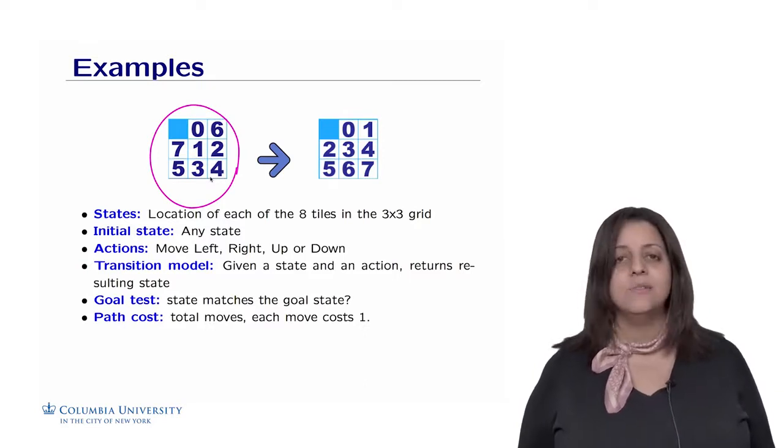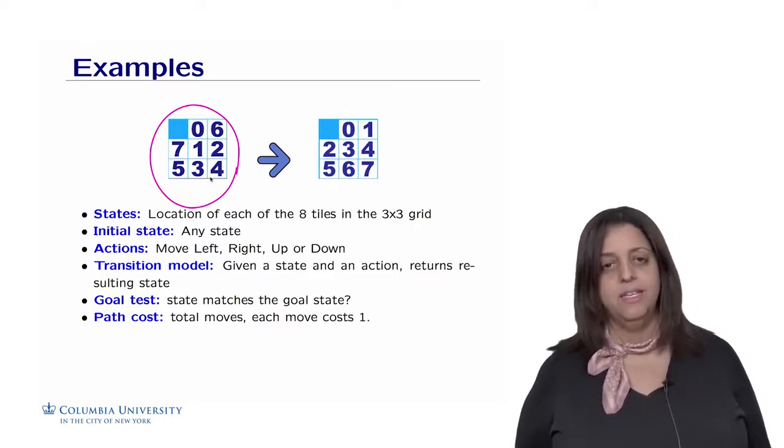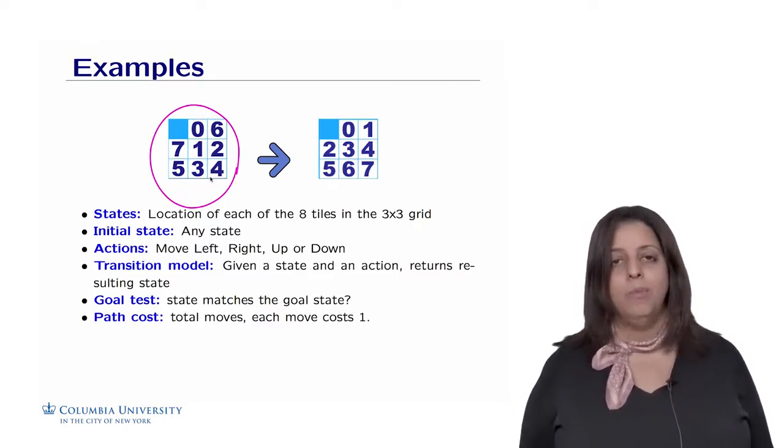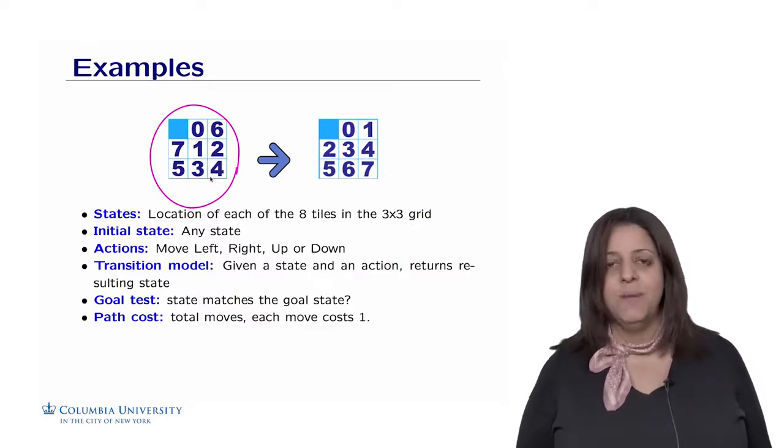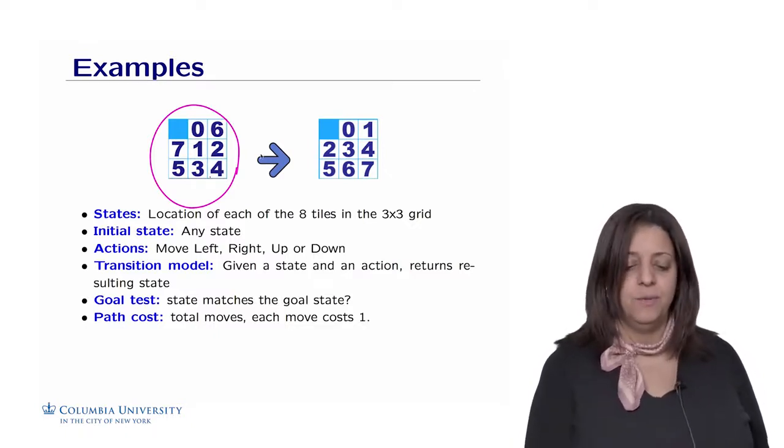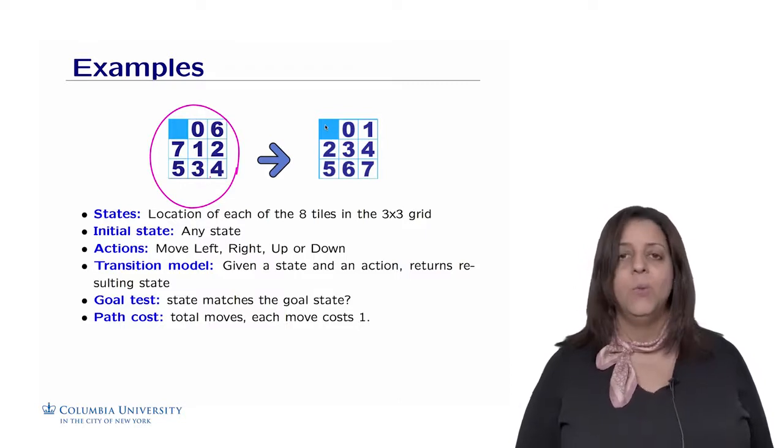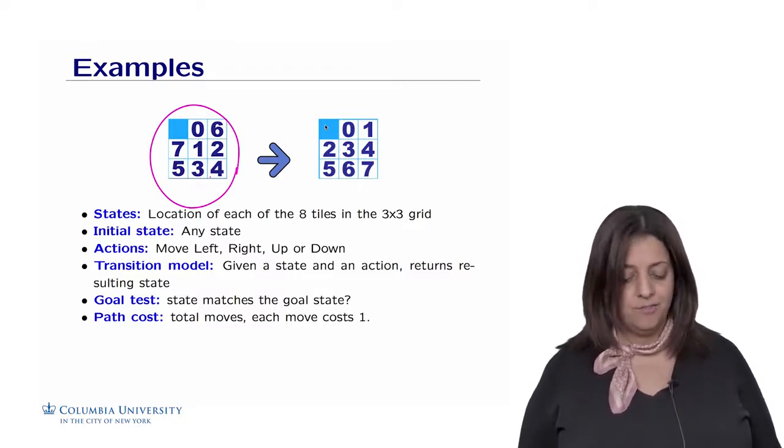The action is we have only four possibilities. Here is to move left, right, up, or down. So because of the shape of the grid and the fact that there is only one square that's empty, we could only do this kind of possible actions.